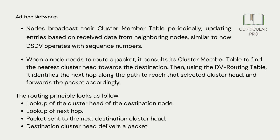When a node needs to route a packet, it consults its cluster member table to find the nearest cluster head towards the destination. Then, using the DV routing table, it identifies the next hop along the path to reach that selected cluster head, and forwards the packet accordingly.